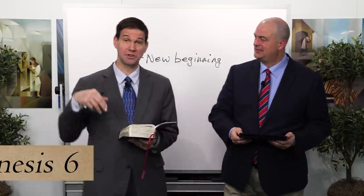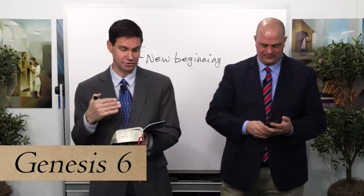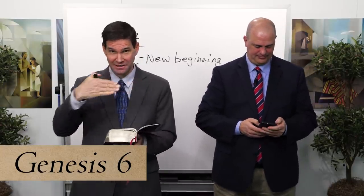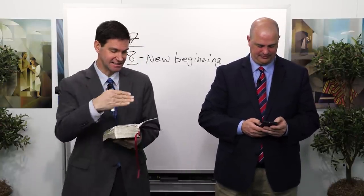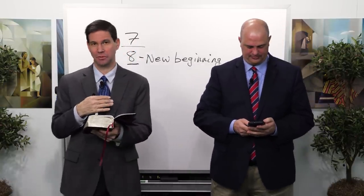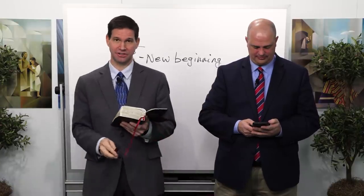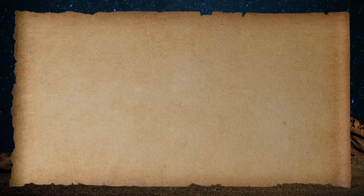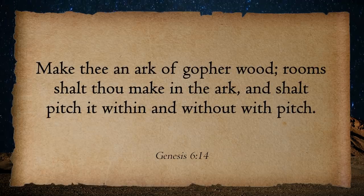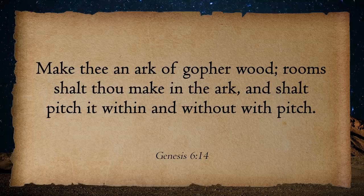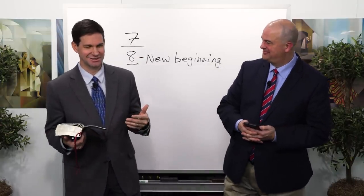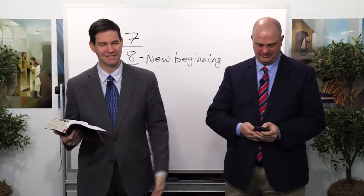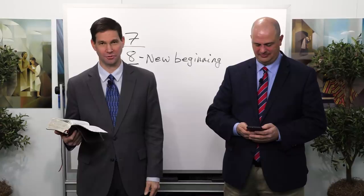Now let's jump into Genesis chapter 6, picking it up in verse 14. If you want to make a little line there, you can — this is the beginning of the part not included in Moses chapter 8. It says: 'Make thee an ark of gopher wood; rooms shalt thou make in the ark, and shalt pitch it within and without with pitch.' So we're getting this description of making the ark waterproof, pitching it on the outside and the inside.